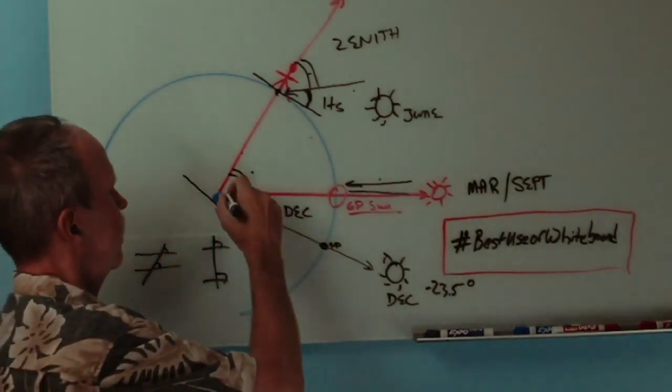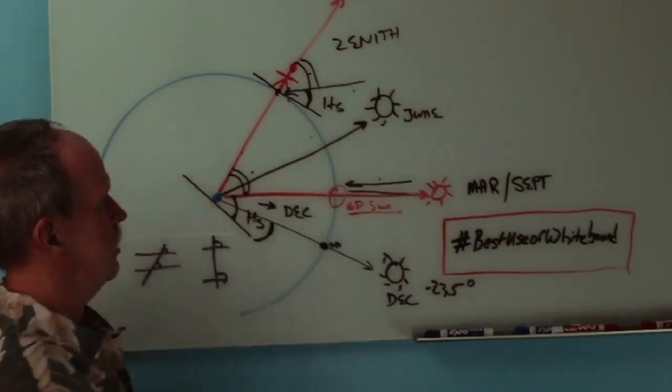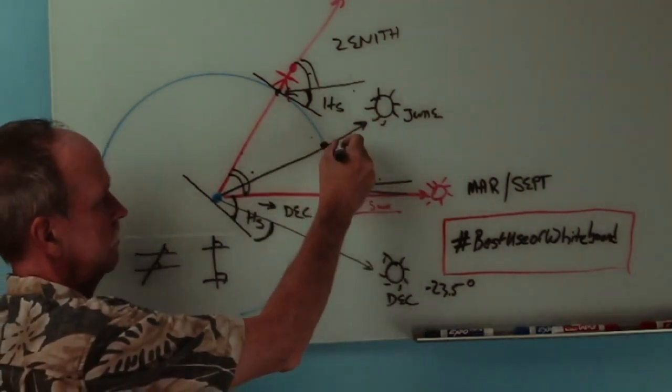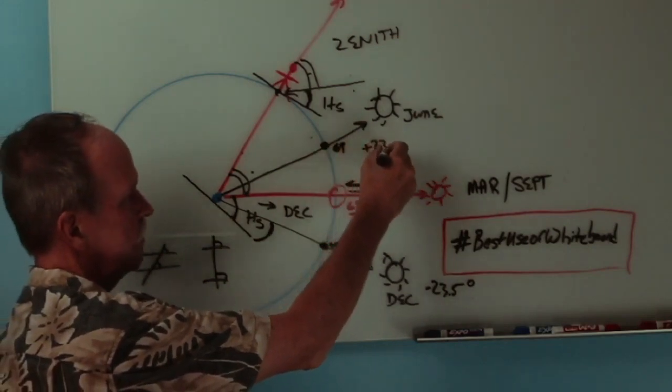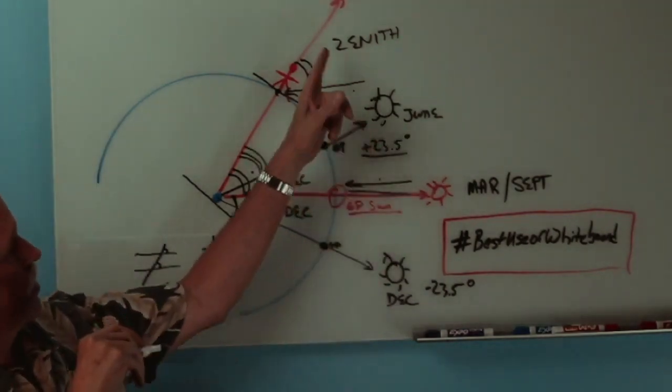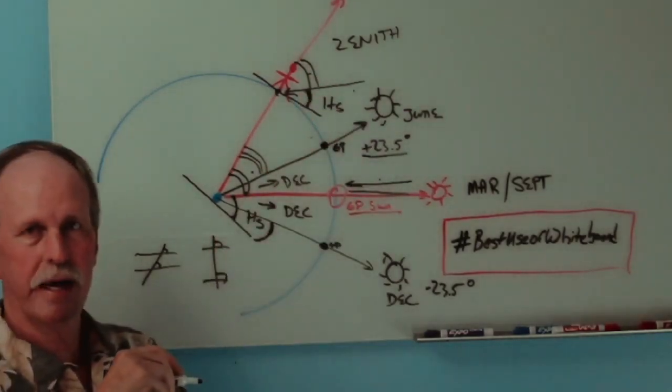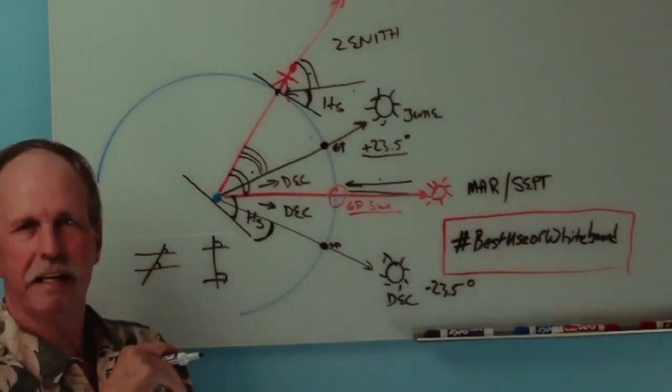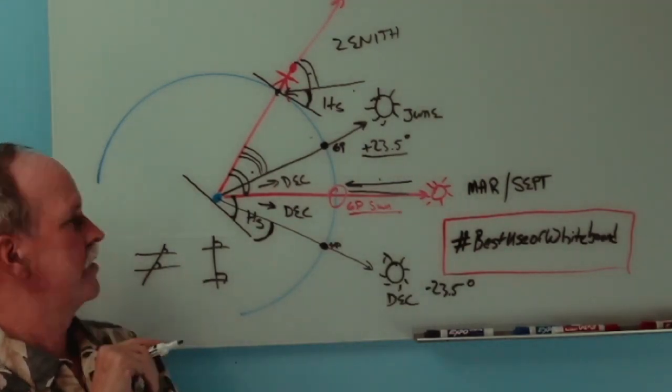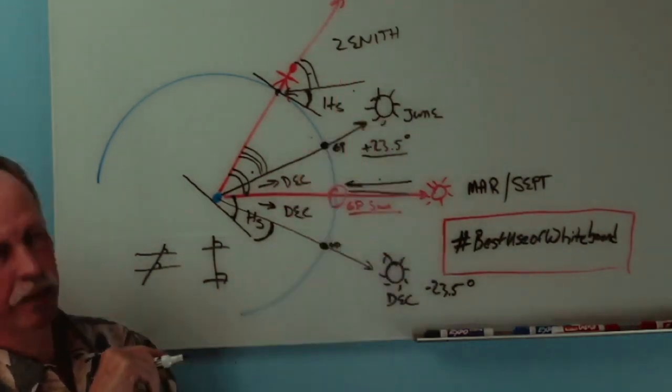Likewise, if the Sun is up here in June, and that's the new GP of the Sun, which is plus 23.5 degrees. What would we measure here? Well, our zenith angle would be 40 degrees minus 23 and a half. So that would be 16 and a half degrees. We'd have to add to that 16 and a half degrees the declination, 23 and a half degrees, and we would come up with 40.